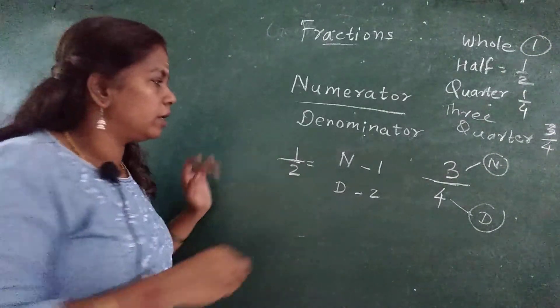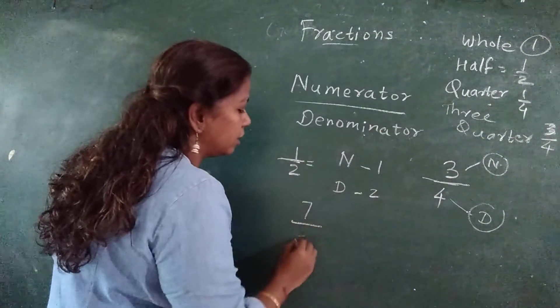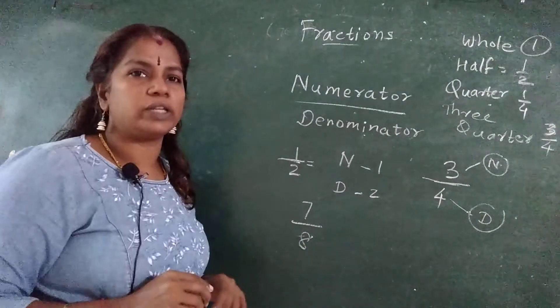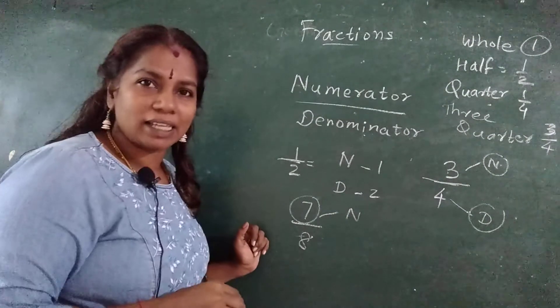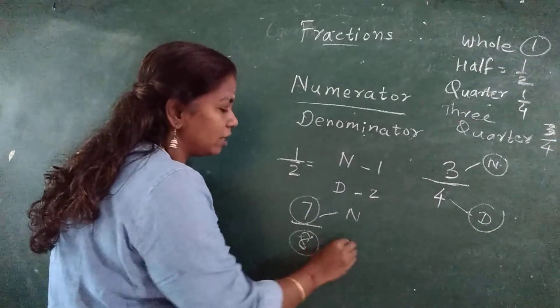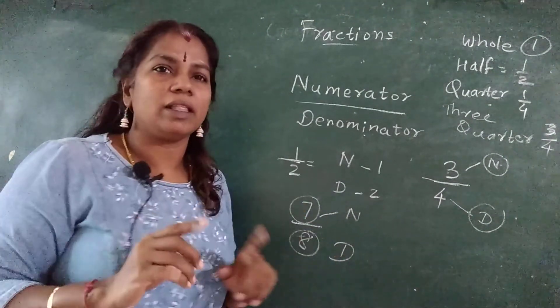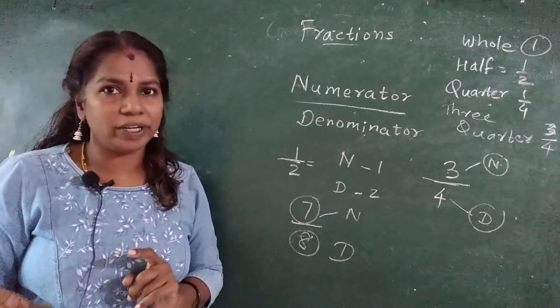Now one more number, 7 upon 8. What is the numerator? Very good, 7 is the numerator. What is 8? 8 is the denominator. Thorough? No doubt in numerator and denominator.